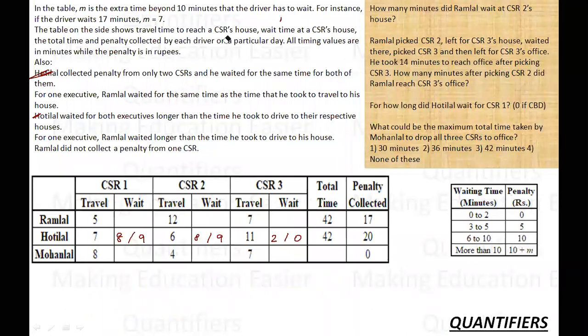So this is all about Khotilal. Let's talk about Ramlal. Ramlal waited for the same time as the time he took to travel to his house for one executive. So it can either be 5, 5 or it can either be 12, 12 or it can either be 7, 7. These are the possibilities. So Ramlal's travel time total is 5, 12, 17, 7, 24. So Ramlal's waiting time is 18 minutes again. Fine is 17. So Ramlal is collecting 17 rupees penalty. So what are the possible penalties? 0, 5, 10 and 10 and above. And he is collecting a total of 17 rupees. So can I say it is only possible if he is collecting 5 and 12. This is the only possible case.